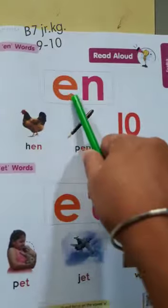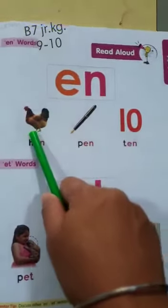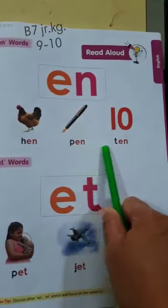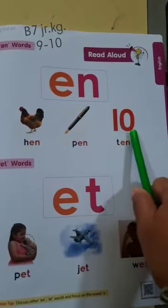See here. En, en words. H, en, hen. P, en, pen. T, en, ten.